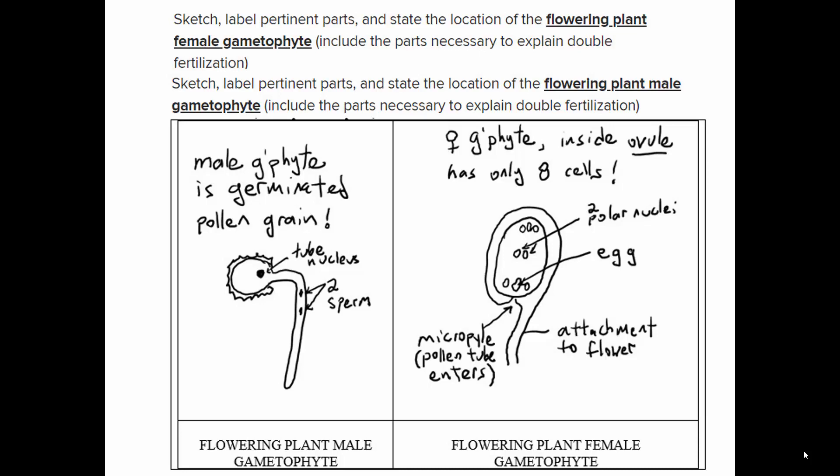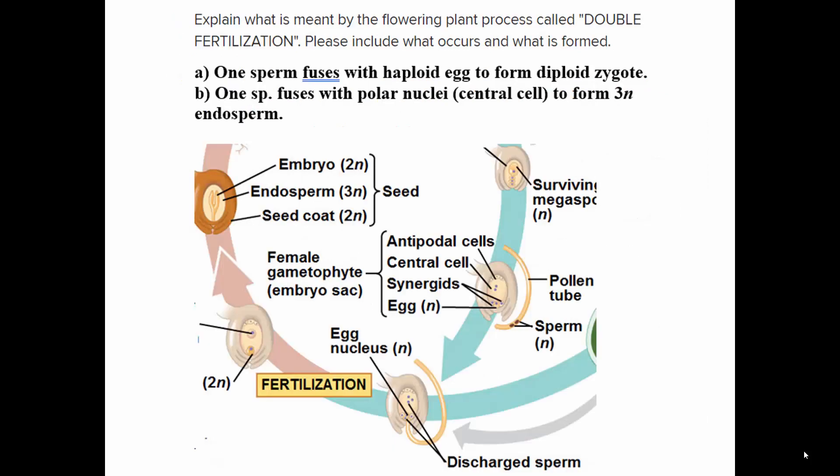There are two sperm, and one fertilizes the egg — forming a diploid zygote and later an embryo sporophyte. The other sperm fuses with the polar nuclei — one plus one plus one equals three — forming a triploid tissue called endosperm. This nutritive tissue called endosperm is produced at the same time as fertilization, so the plant doesn't waste energy making food for an embryo that isn't there. This is called double fertilization.